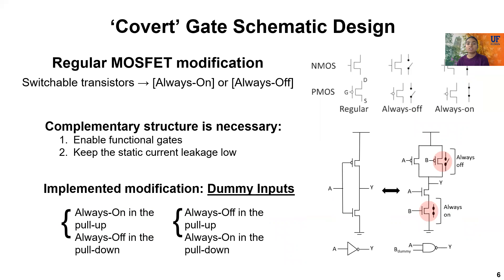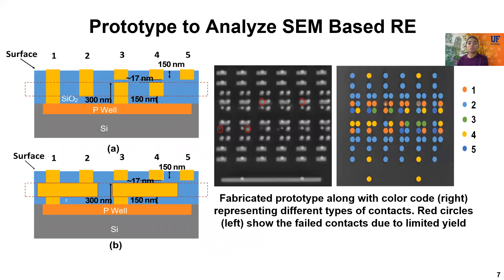In order to create a covert gate, we require variants of regular PMOS and NMOS transistors that you are seeing in these figures. We want to make sure through our analysis that these variants are indistinguishable under ACM imaging in different operating conditions. To analyze our proposed approach, we fabricated a prototype in-house. The fabricated prototype, along with different color codes, represents different types of contacts — some are camouflage structures and some are real.